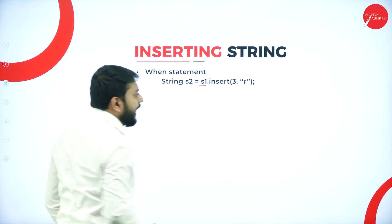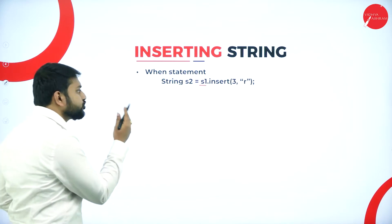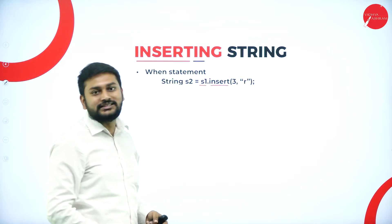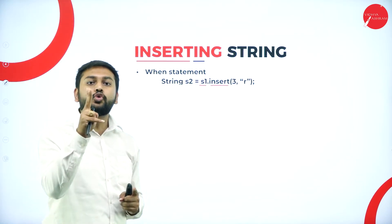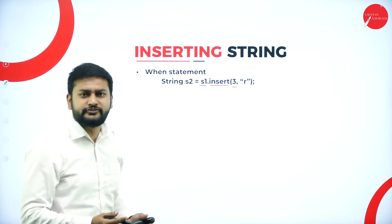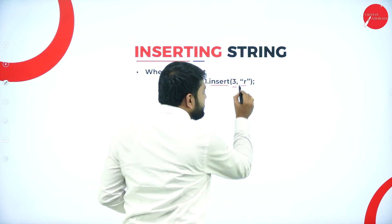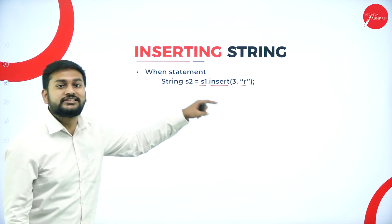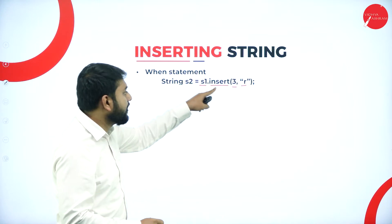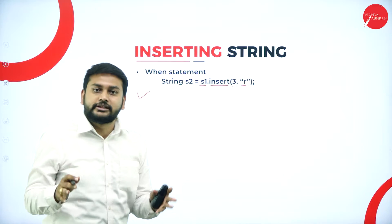Here you can observe I have a variable called s1 — s1 is a string that I have. For that string, I'm using the method called insert. This method takes two important parameters. The first one is 3, which is the index where exactly I want to insert the character 'R'. This is how I will be inserting a particular character at a particular position by mentioning the index — that's what you need to remember with respect to the insert method.